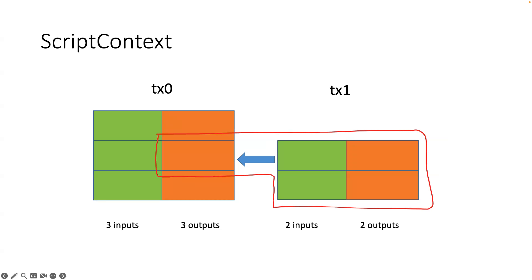It's the context of the transaction itself and the spent outputs that are the input transaction. Yes, pretty much. On the highest level, when the sCrypt smart contract runs, it runs in some kind of environment. Usually the smart contract only knows the so-called public function arguments, but it knows even more information than that — it runs in a so-called context. This context consists roughly of the transaction that's spending the smart contract output and the smart contract output itself.